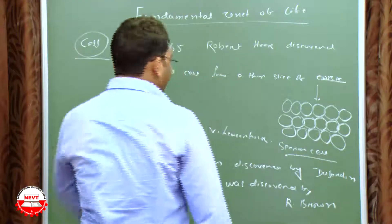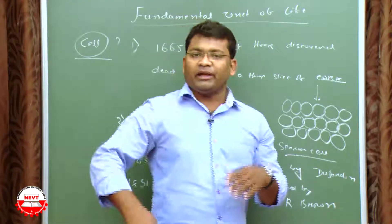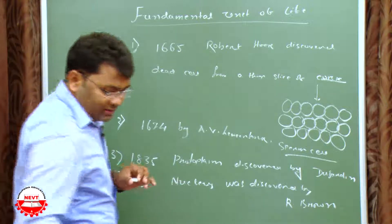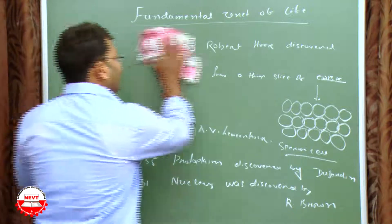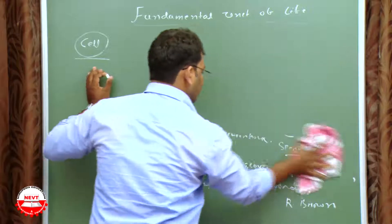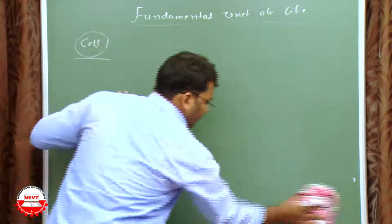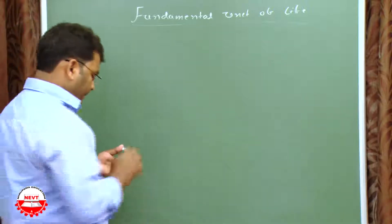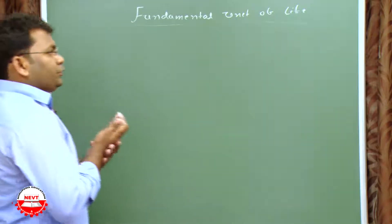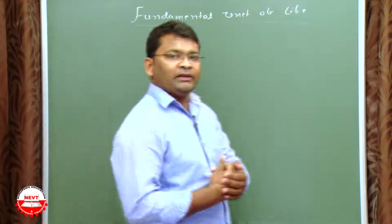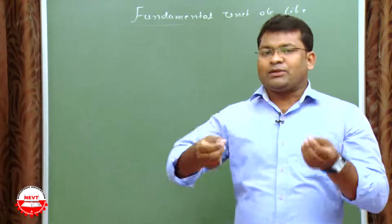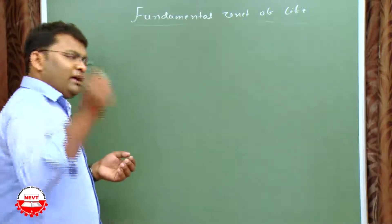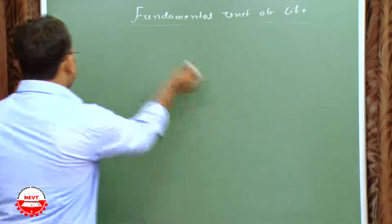So these are the few steps taken by few scientists on cells. Let's see in detail what cell contains and what are the parts of cell and its structure. Before going to cell parts, let's discuss some idea regarding microscope because you can see the cellular parts by using microscope.